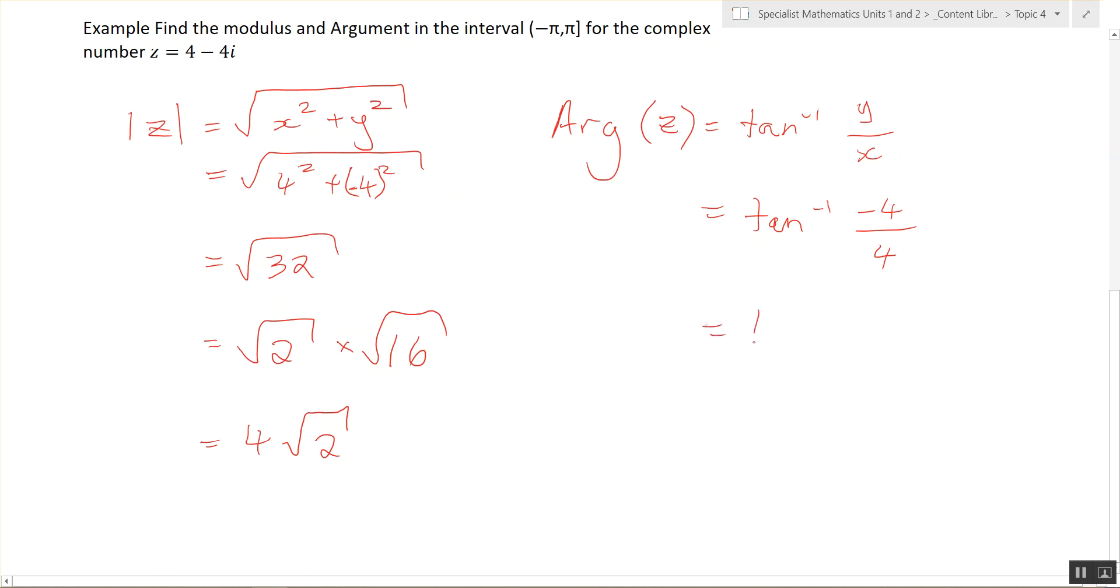All right, so we have... tan negative 1 of 1. So the opposite over adjacent. Does anyone know the special triangles?